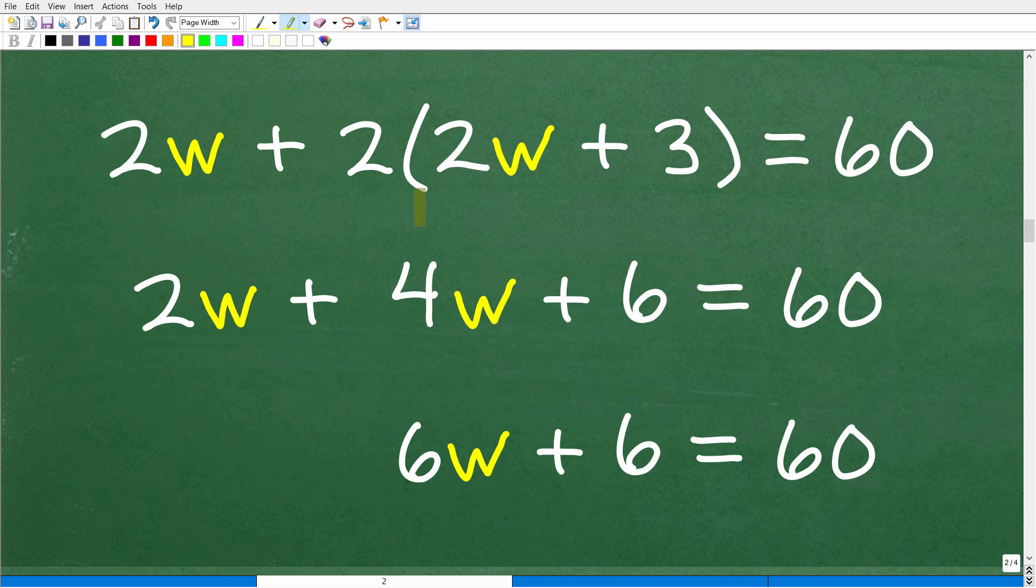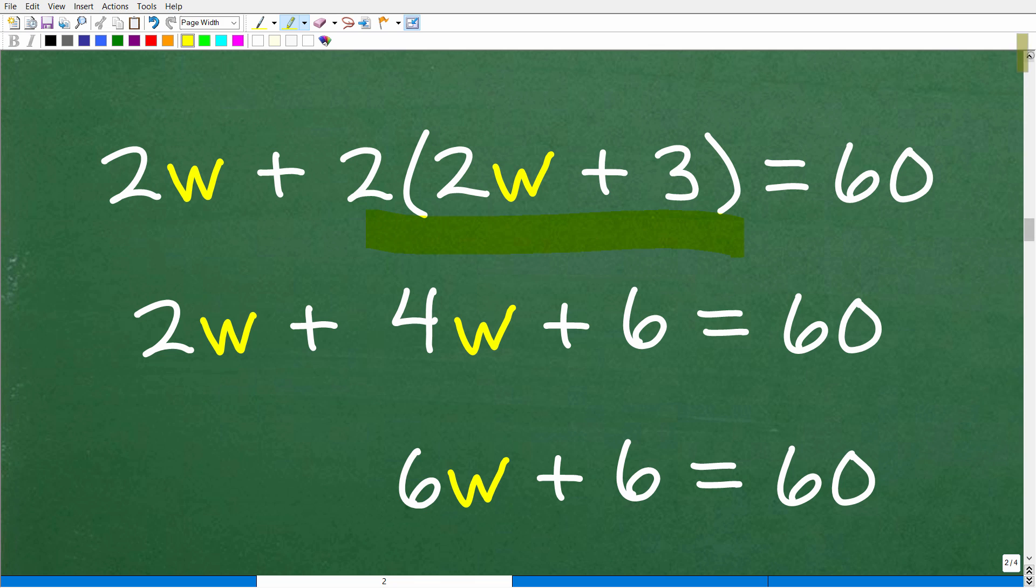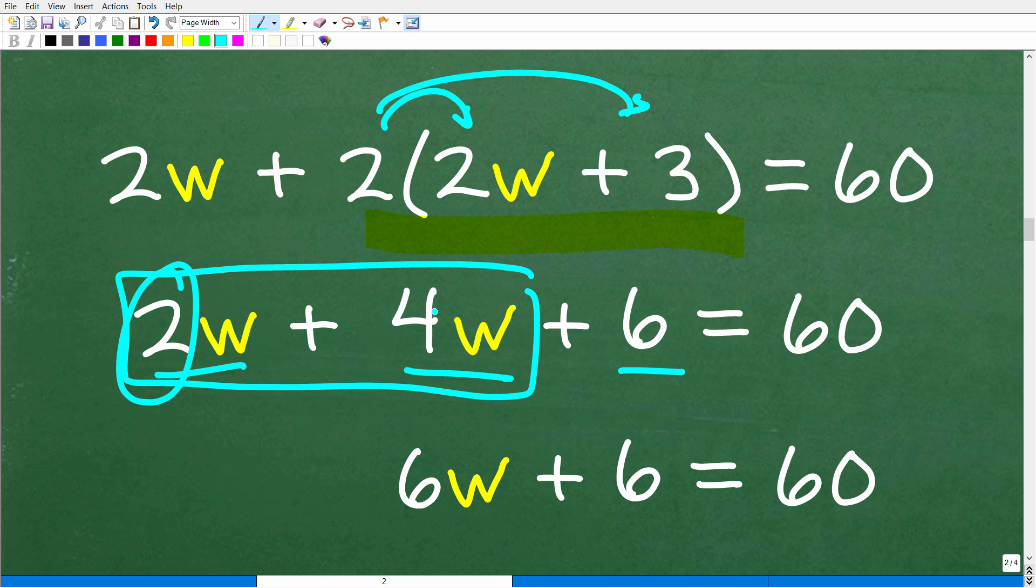What do we do first? This part of the equation is where we need to use the distributive property. Anytime you have a number outside of parentheses, we can't do anything until we distribute this number to these inside terms. So 2 times 2W is 4W. 2 times 3 is 6. So now I have 2W plus 4W plus 6. 2W and 4W, these are like terms. We can add the coefficients, which are the numbers in front of the variables. 2 and 4 is 6. So now we have 6W plus 6 is equal to 60.